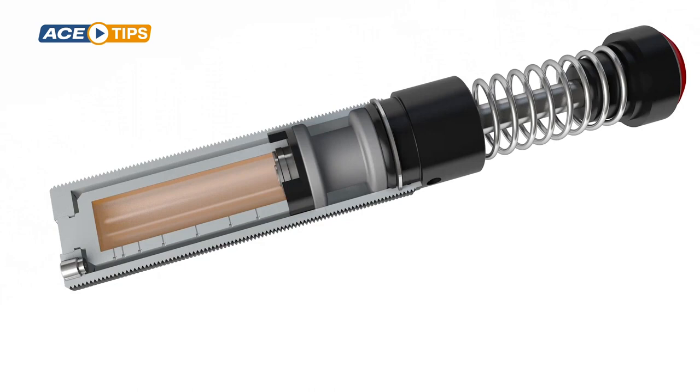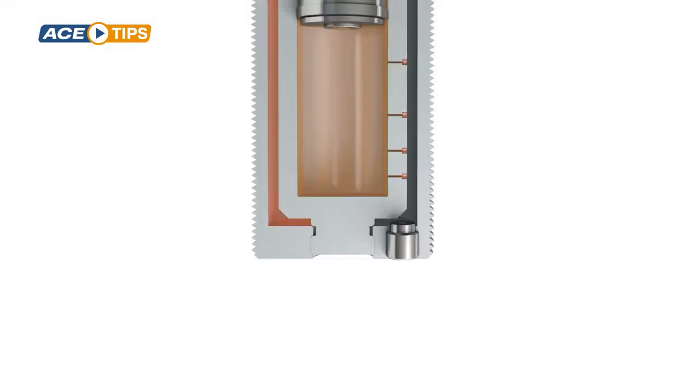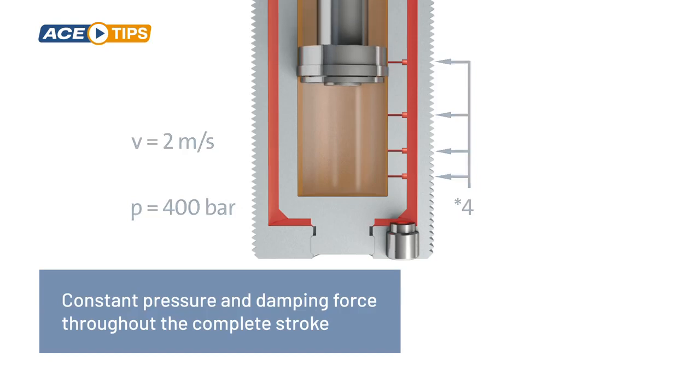The oil flows through a valve in the piston back into the pressure chamber. The metering orifices are arranged along the stroke so that the mass is retarded with a constant damping force.